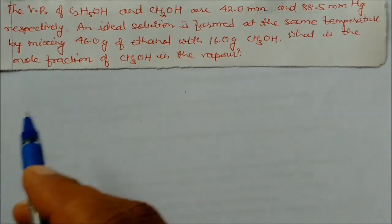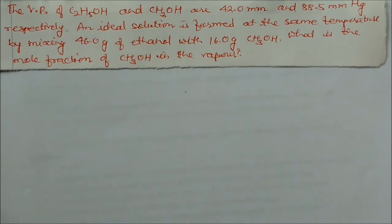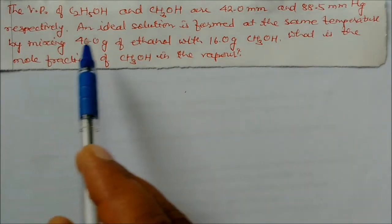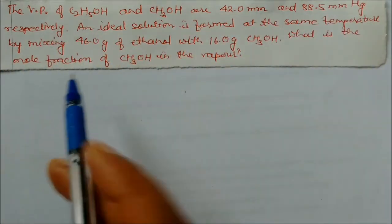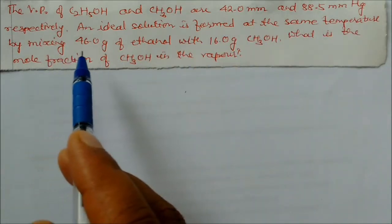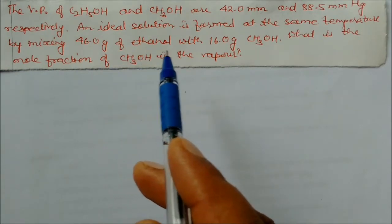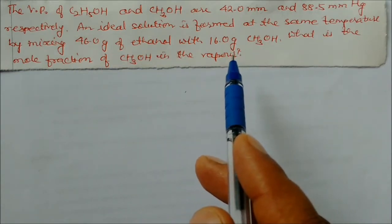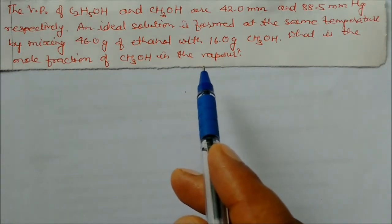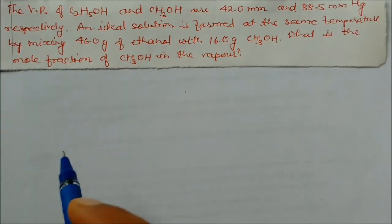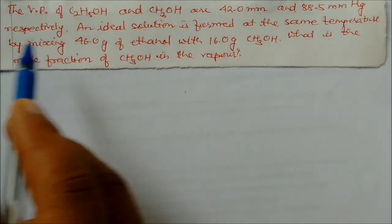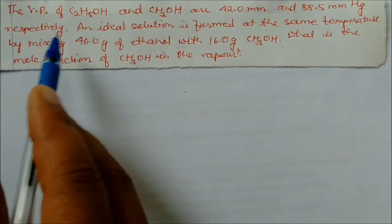Let us see some problems based on the vapor pressure of solutions using Raoult's Law. The vapor pressure of ethanol and methanol are 42 mmHg and 88.5 mmHg respectively. An ideal solution is formed by mixing 46 grams of ethanol and 16 grams of methanol. We have to find the mole fraction of CH₃OH in the vapor.